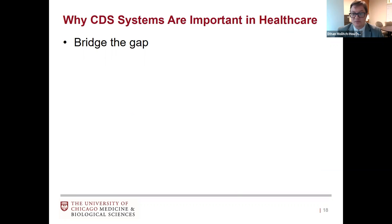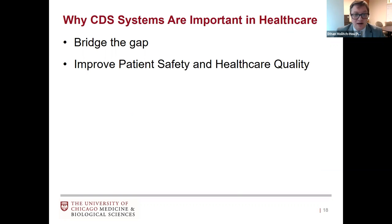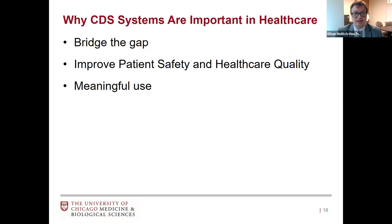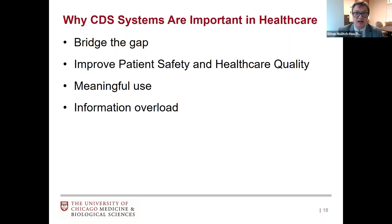Why do we think these systems are important? They help bridge the gap between translating science from discovery and disseminating that information to influence patient care and change physician behavior. We want to keep the initial promise of the electronic health record — patient safety and healthcare quality — and they became a key requirement for meaningful use, as defined by the Centers for Medicare and Medicaid Services. They also help us absorb the information overload of all that medical knowledge.